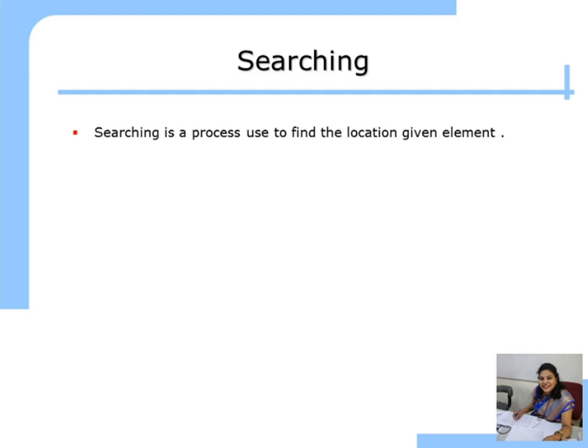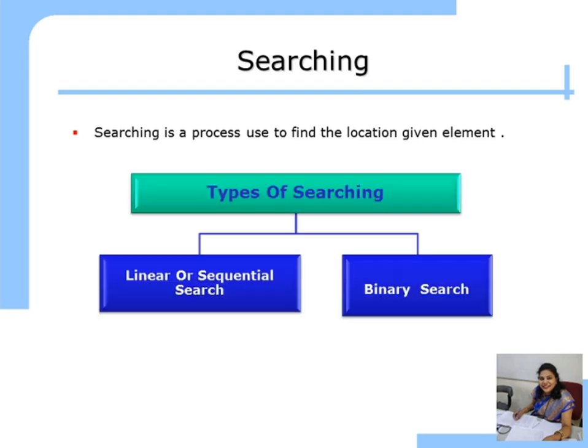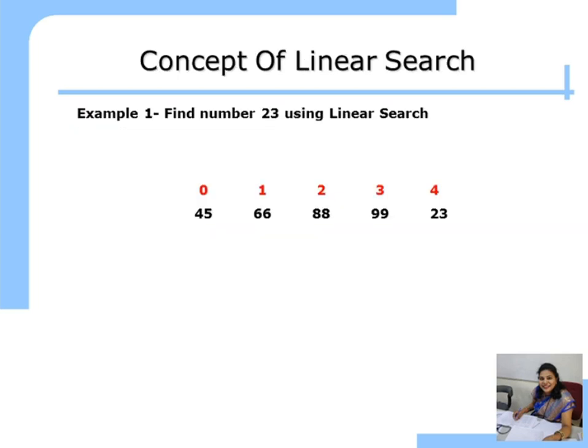So, what is searching? Searching is a process used to find the location of a given element. There are two types of searching: Linear or Sequential Search and Binary Search.